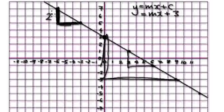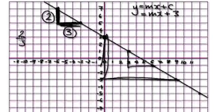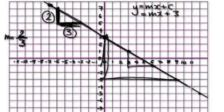The up and down here is 2, and the across here, the width, would be 3. So the gradient is 2 over 3. But because this is a negative gradient — it's going downhill, from left to right — this will be a negative gradient, so we would stick a negative in here.